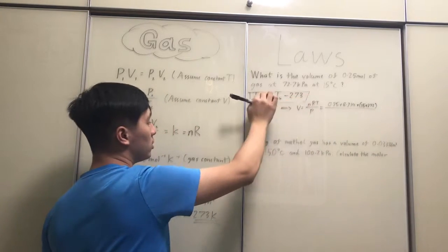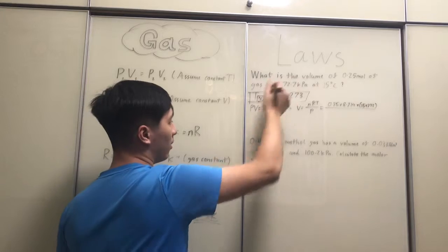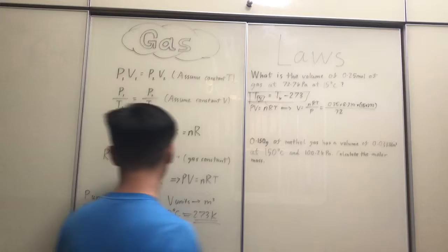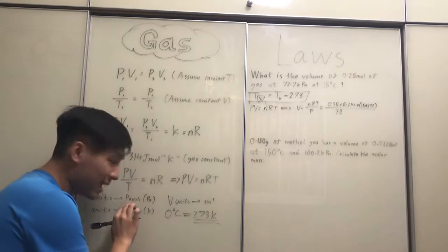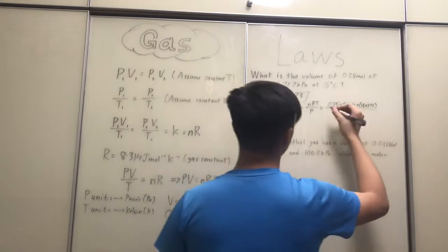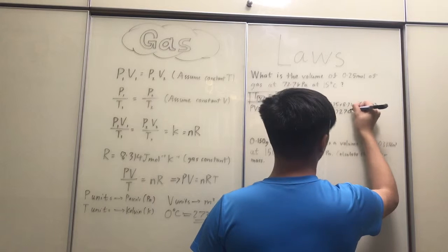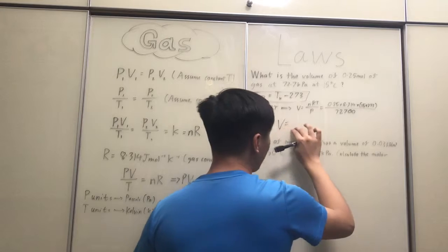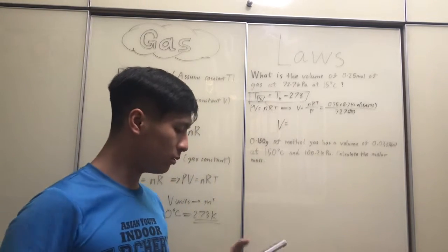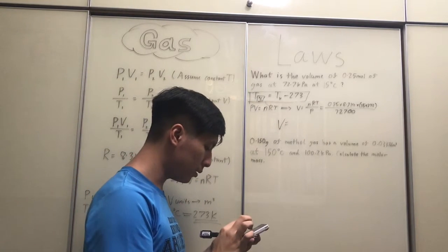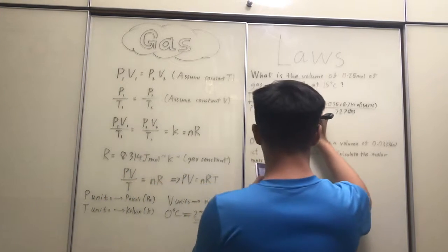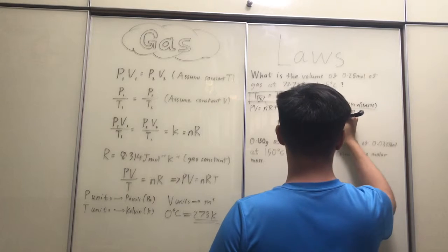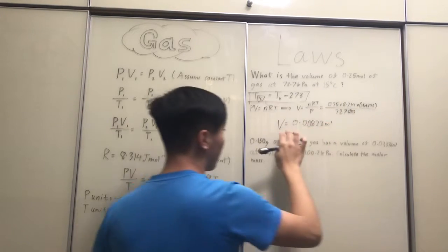And if we just plug that into the calculator, our value of V would be equal to, as I've calculated here, 0.00823 meters cubed. So, this would be our value of V.